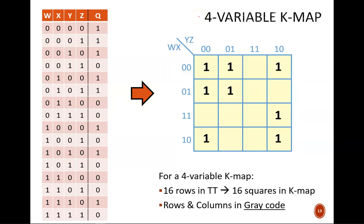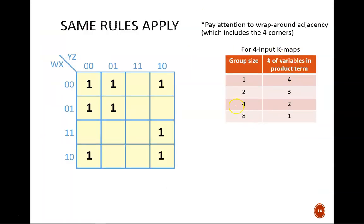Next step is to identify groups. The same rules apply as with three input maps. All groups must include only ones, contain adjacent squares, and be of a size that is an integer power of 2. The bigger the groups we can find, the simpler our final equation.